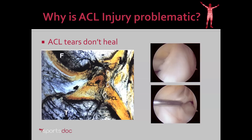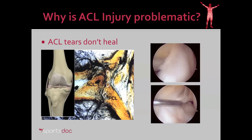Why is the ACL injury problematic? ACLs do not heal on their own. Here you can see a diagram of the blood supply to the ACL. There's synovial fluid surrounding the ACL — joint fluid with no blood vessels — going circumferentially around it. The only blood supply comes through the lining of the ACL, called the synovium. So if the ACL gets torn in the middle, the blood supply is disrupted, and the joint fluid surrounding it has very little nutrients and very little potential for healing.